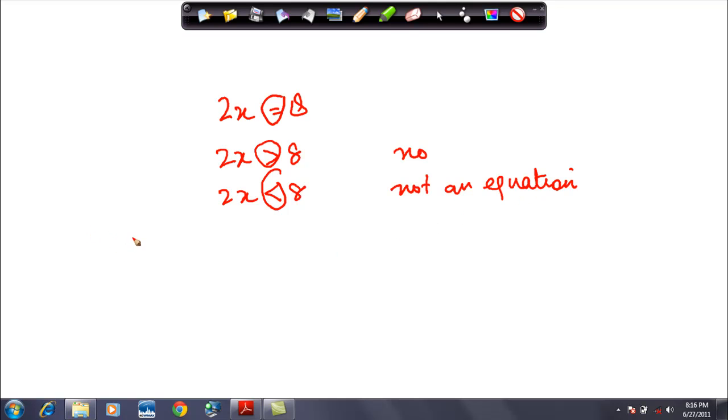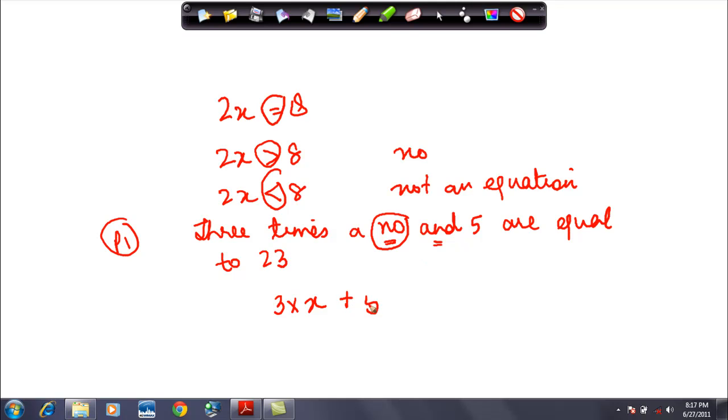Let us write certain equations. Problem 1: 3 times a number and 5 are equal to 23. Now, if you have to write this as an equation, it says 3 times a number. This number is a variable. So let us say it is X. 3 times, which means 3 multiplied by this number, and which means plus 5 are equal to 23. So that is how you write an equation.